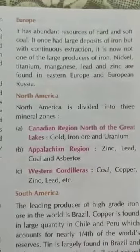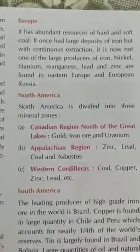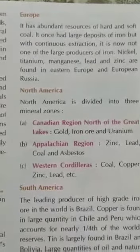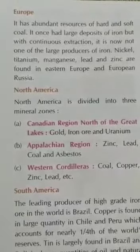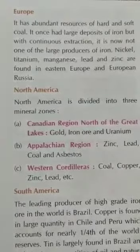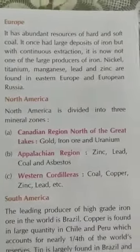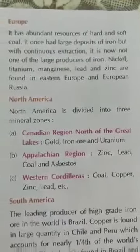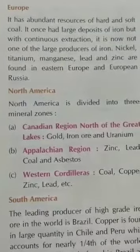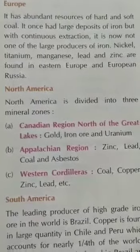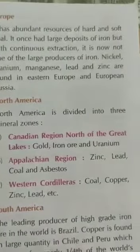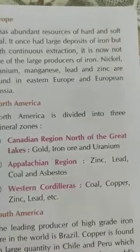North America is divided into three mineral zones: the Canadian region, the Appalachian region, and the western region. In the Canadian region we find gold, iron, and uranium. In the Appalachian region we find zinc, lead, and coal. In the western region we find coal, copper, zinc, and lead. Most major minerals can be found in North America.